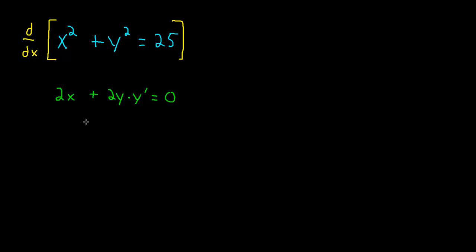Now the technique is to get all your y primes to one side. Since there's only one, that's really easy. Now we divide by 2y and we have our first derivative. Now don't forget that this still has the same meaning as any old derivative. It's the slope of the tangent line to this curve at a given point x, y in this case because this is an implicit equation, so it's in terms of both the x and the y coordinate.